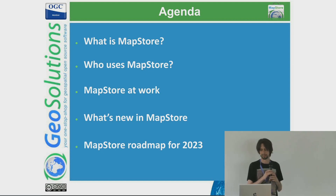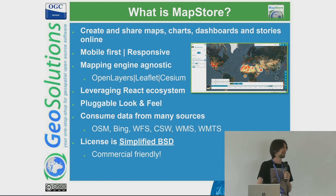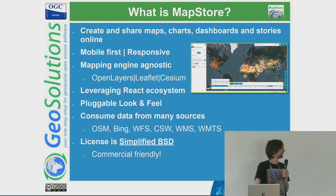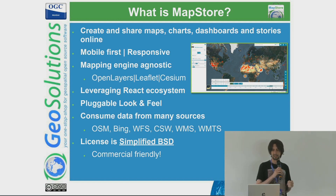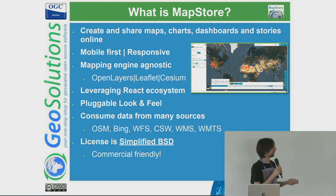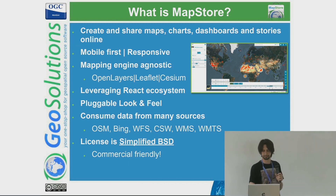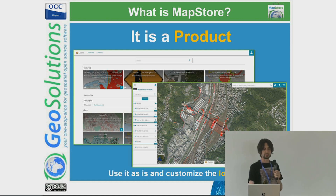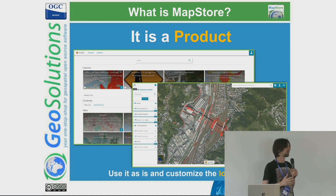MapStore is an open source web JavaScript framework. It's pluggable, so you can customize it for your branding. It's also map-agnostic, implementing different mapping libraries. By default it includes OpenLayers, Leaflet, and the Cesium engine.